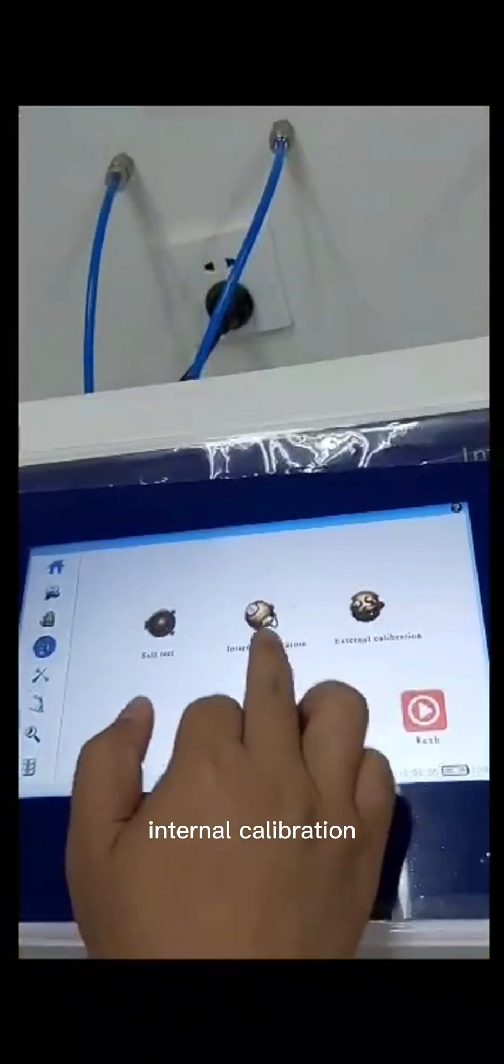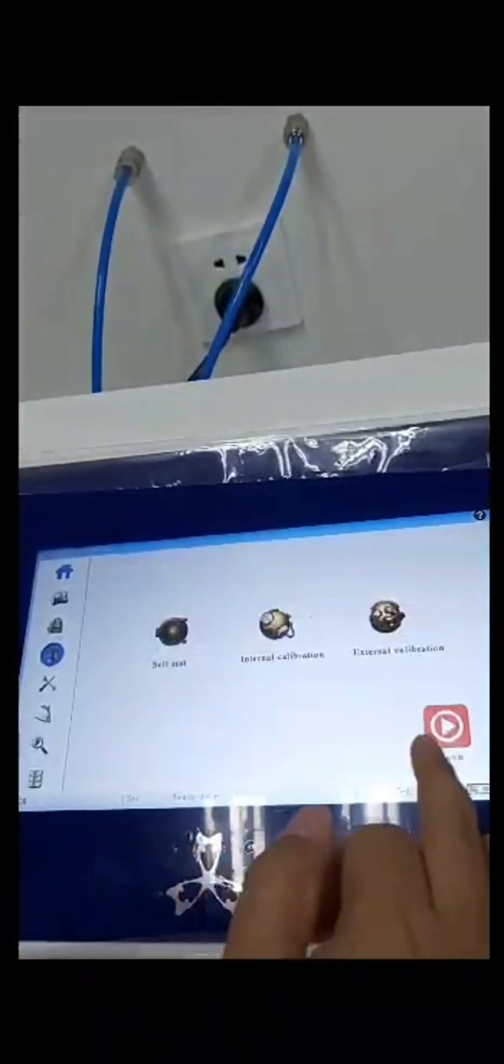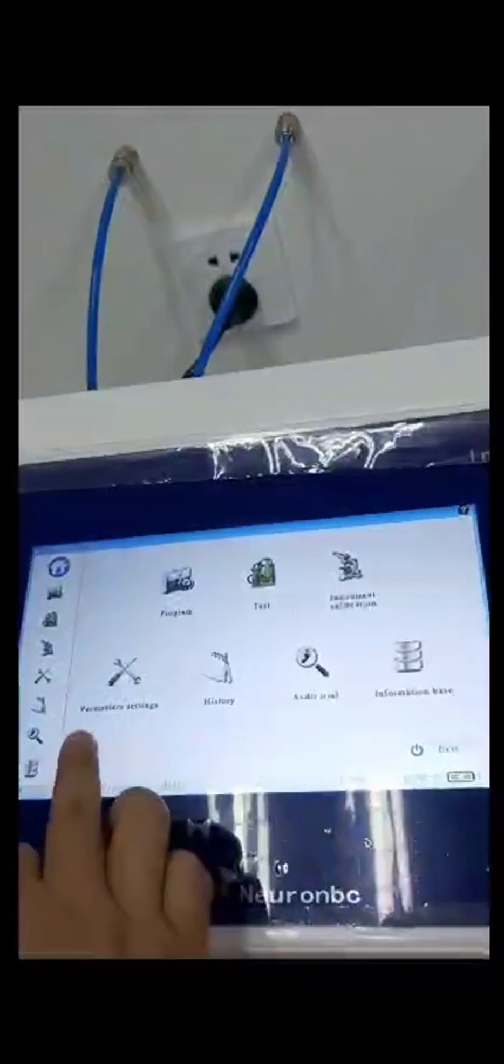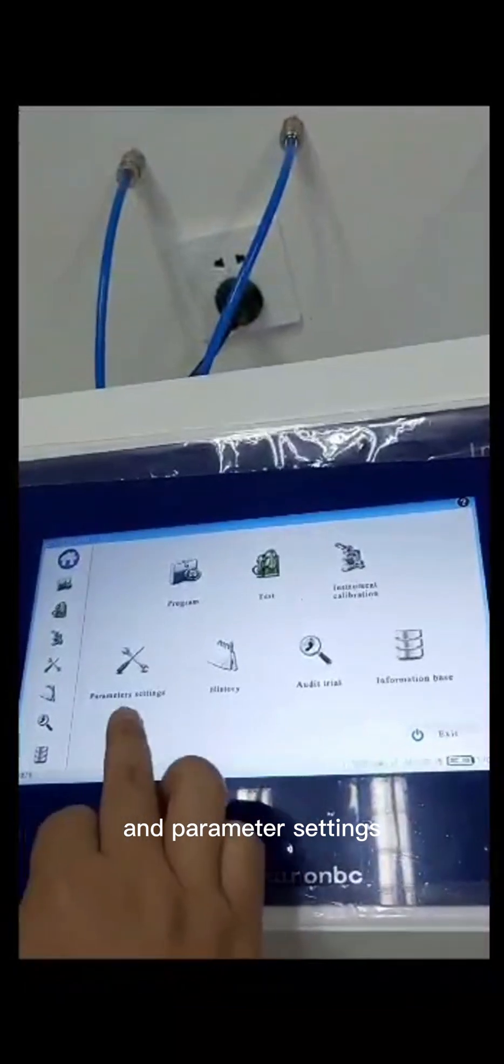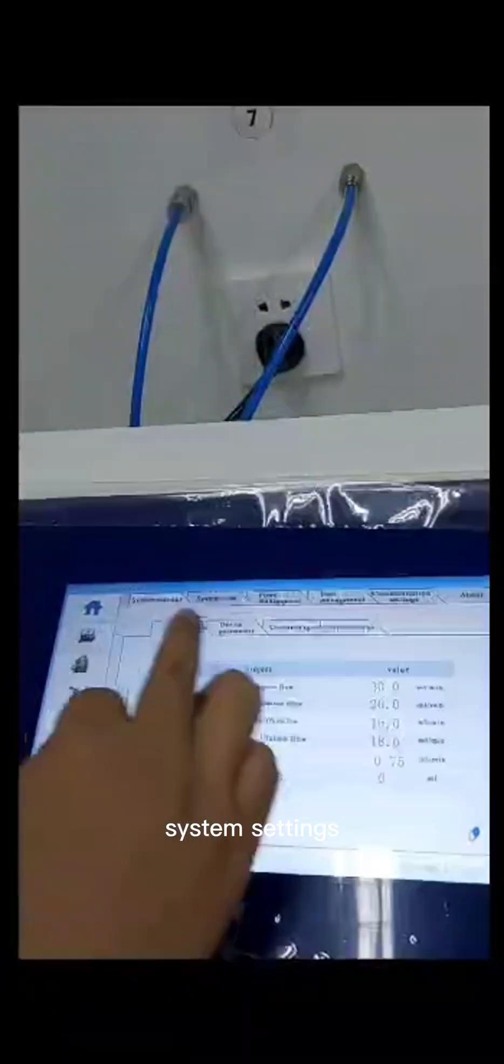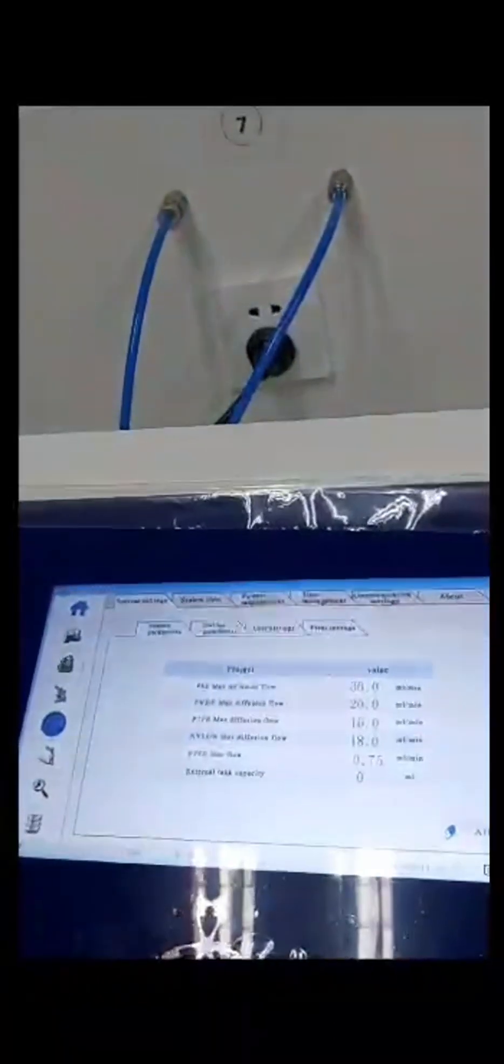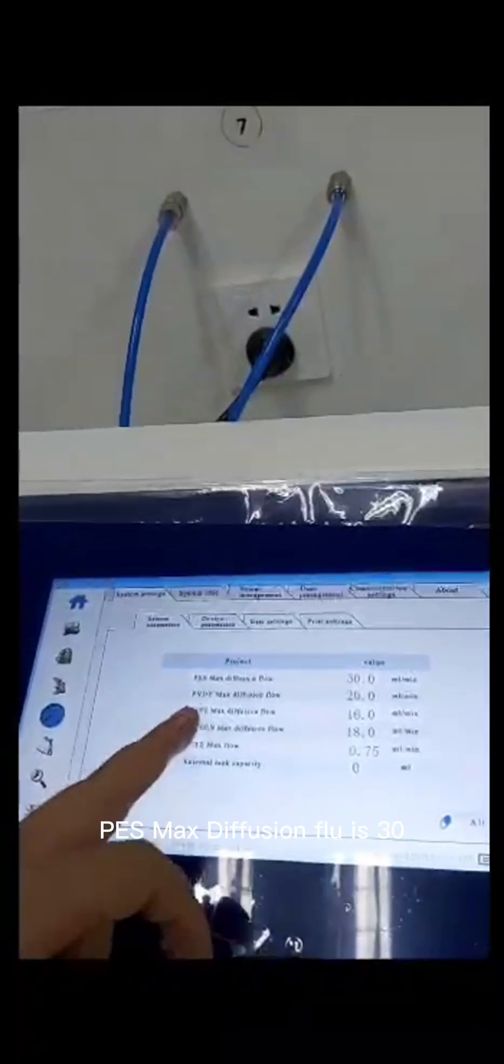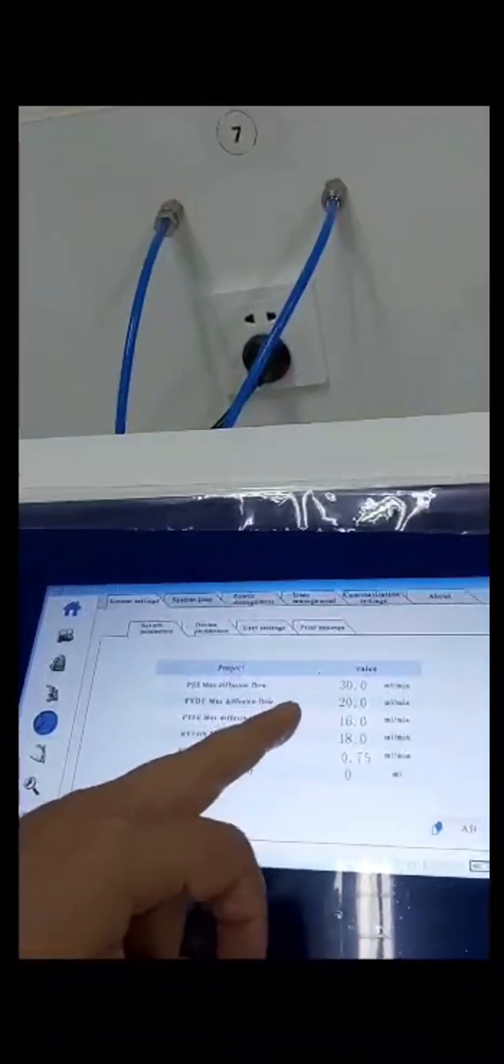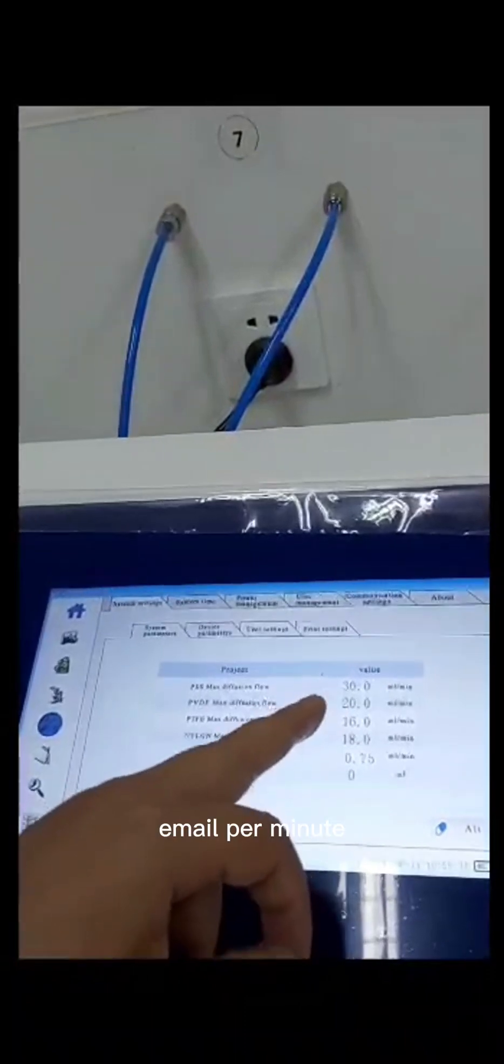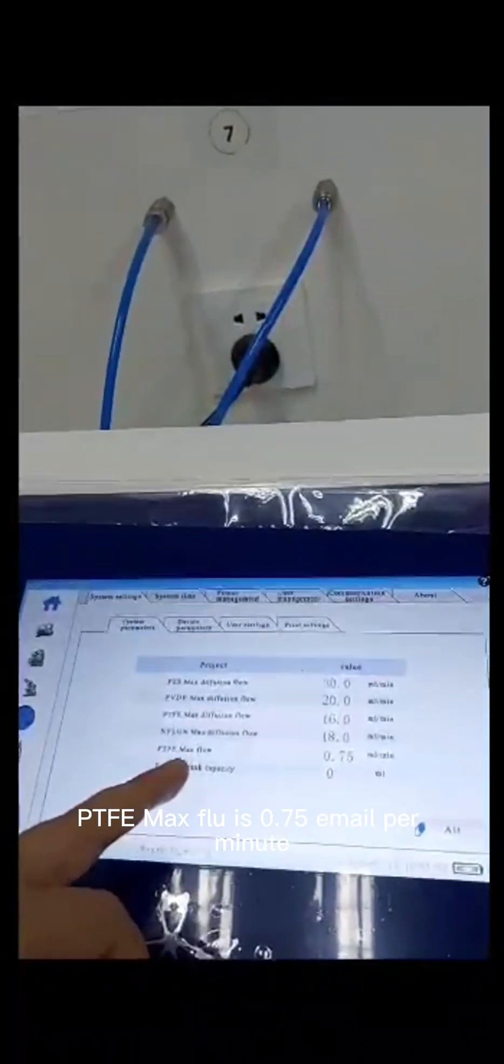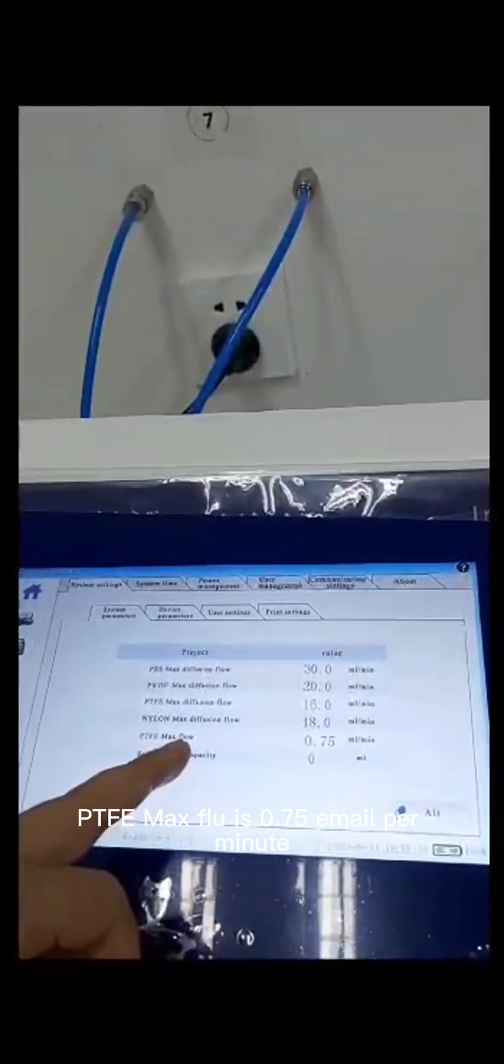And instrument calibration. Self-test, internal calibration, external calibration. And parameter settings. System settings, system parameters. PES max diffusion flow is 30 ml per minute. PTFE max flow is 0.75 ml per minute.